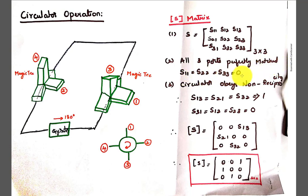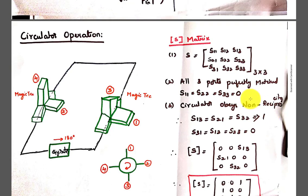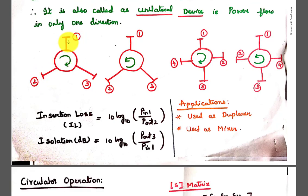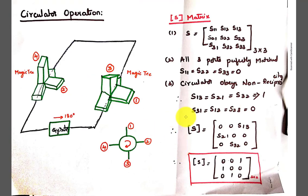For the S-matrix of a 3-port circulator: all three ports are perfectly matched, so S11 = S22 = S33 = 0. For the non-reciprocal property, power incident at one port comes only from the adjacent port. Power incident at port 1 comes from port 3 only, so S21 = 0. Power incident at port 3 comes from port 2 only, so S13 = 0. Power incident at port 2 comes from port 1 only, so S32 = 0. Thus S31, S12, S23 equal zero, and the remaining elements exist. The 3×3 S-matrix of a 3-port circulator becomes [0, 0, 1; 1, 0, 0; 0, 1, 0].